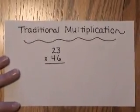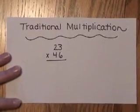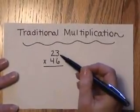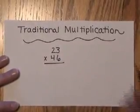In traditional multiplication, which is the way most adults learned how to multiply, if you were to take the numbers 23 times 46,